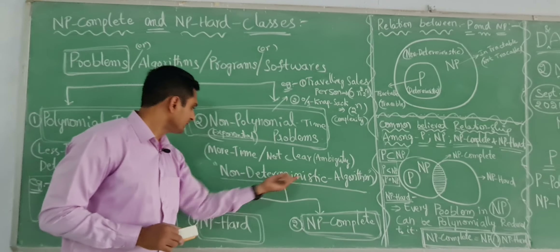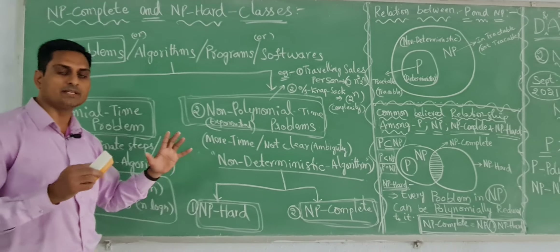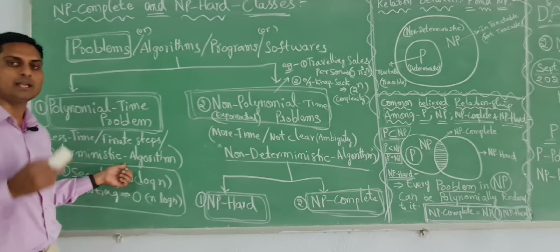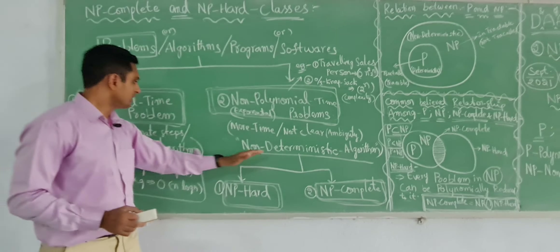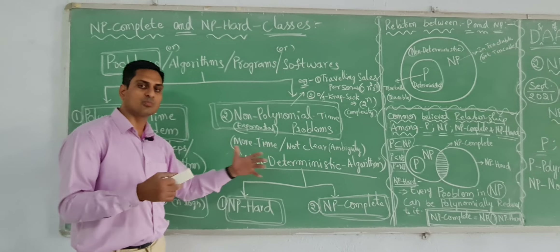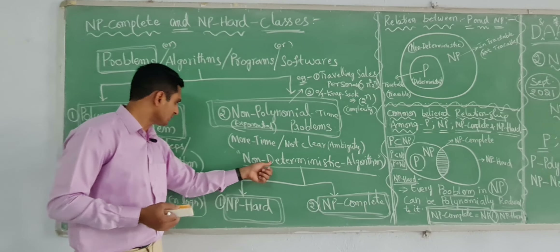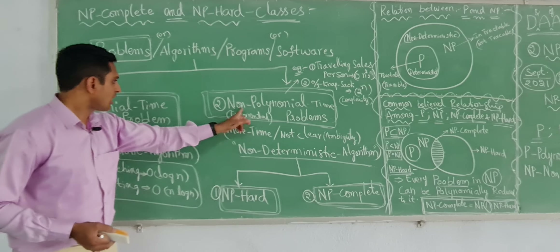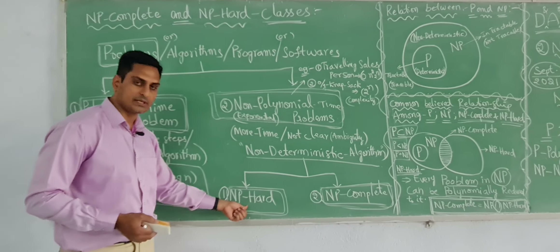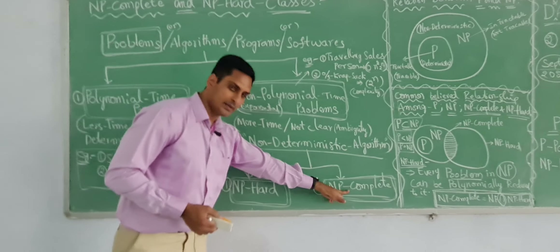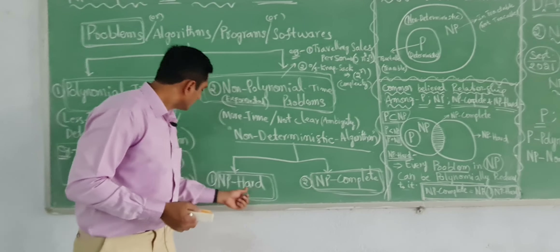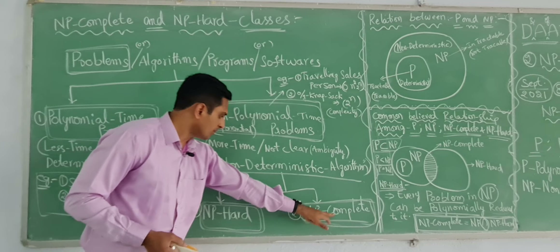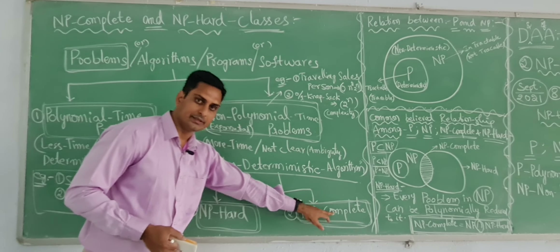Deterministic and non-deterministic — very simple. Deterministic means we will get, with a finite number of steps, the same output every time. Non-deterministic means we do not get the same output again and again — an ambiguity situation. Non-polynomial algorithms are of two types: NP-hard and NP-complete. NP-hard means non-deterministic polynomial hard; NP-complete means non-deterministic polynomial complete.